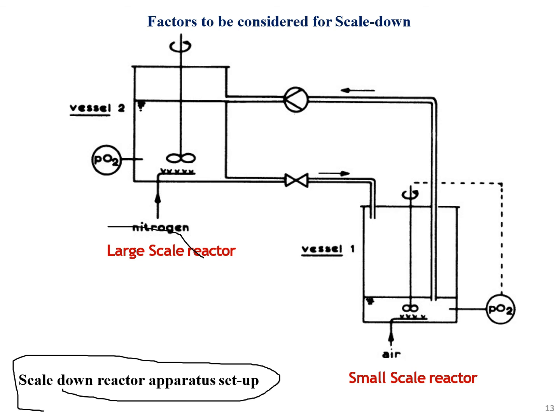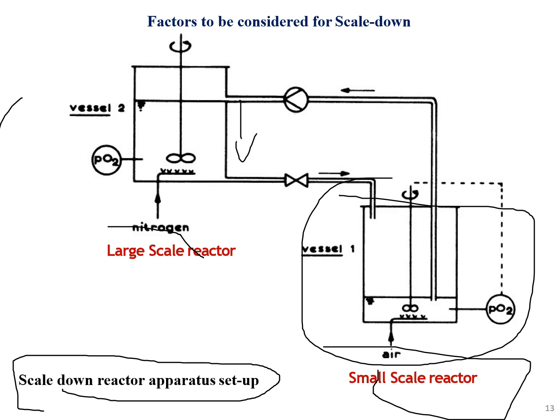The scale-down reactor apparatus setup shows a large-scale reactor linked to a small-scale reactor. The small-scale reactor is derived by decreasing oxygen levels, surface area, and overall volume — reducing the volume-to-surface ratio so that reactions can take place at smaller scale.